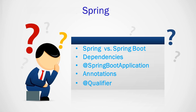@Qualifier annotation is used when there is ambiguity in bean configuration. Suppose I have two beans of the same type and want to identify a particular bean by name — I can use @Qualifier with a name or alias to differentiate between beans based on their names.